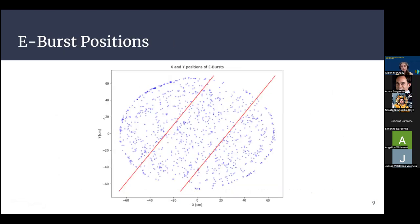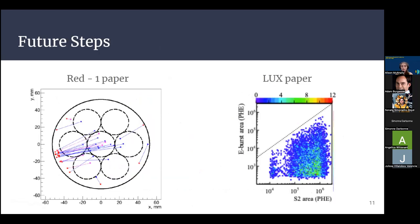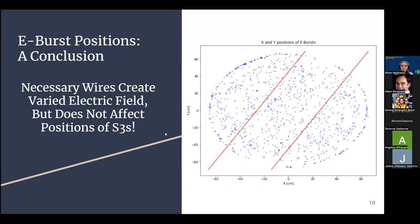The X and Y positions of the electron bursts that fit into that cut were determined. It is always important to eliminate any obvious outliers. Shown here in red are two wires that run through the liquid xenon chamber. However, we can assume that the electron bursts are likely not caused by these wires, and instead occur randomly. These wires have the essential job of ensuring that the anode in the chamber does not bend from the force of the electric field running through it.